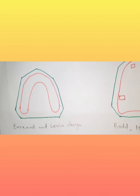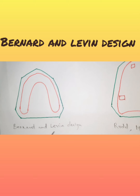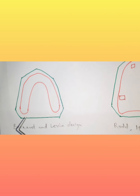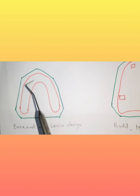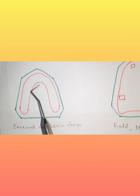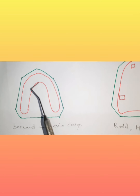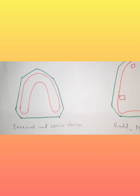In the Bernard and Levin design, two millimeters of baseplate wax are adapted in the alveolar ridge region only — not in the palate region. This is the key difference from other spacer designs, where wax is applied to the palatal region as well.